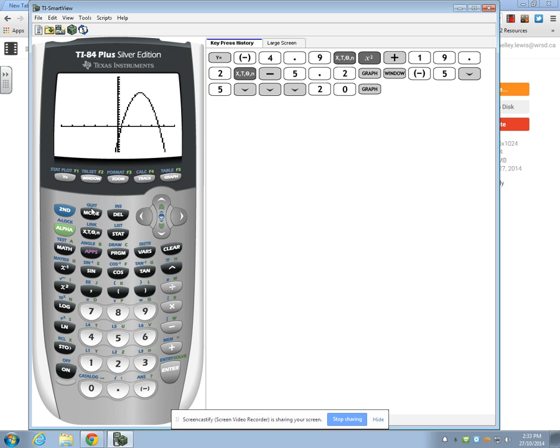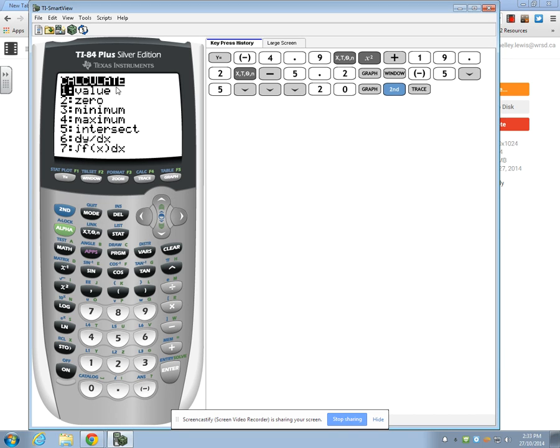We have to find each x-intercept separately so we'll start with the one on the left. To find the x-intercept you press the second button and then trace. And this takes you to your calculate menu. Another name for x-intercept is the zero of the graph. So, we're going to scroll down until we've selected zero or the number two option and press enter.